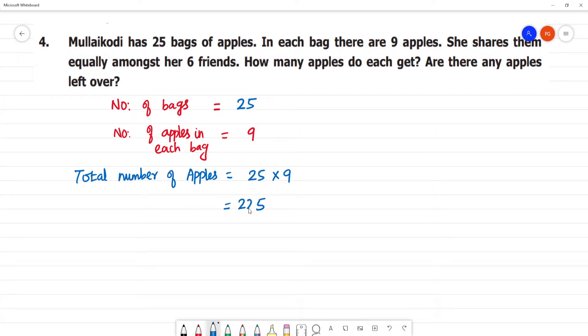There are 225 apples total. She shares them equally among 6 friends. Number of friends is equal to 6. Each friend will get how much?